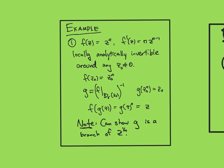But here, let's just do this basic example of f of z equals z to the n. Its derivative is n z to the n minus 1. So whenever I'm at a z0 that's nonzero, then f will be locally analytically invertible around the point in question.